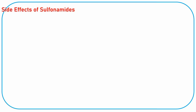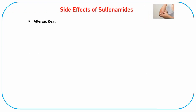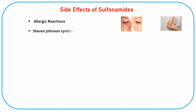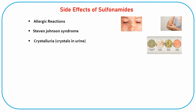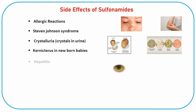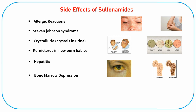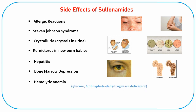Side effects of sulfonamides include allergic reactions, Stevens-Johnson syndrome, crystalluria, production of kernicterus in newborn babies, hepatitis, bone marrow depression, and hemolytic anemia in persons with glucose-6-phosphate dehydrogenase deficiency.